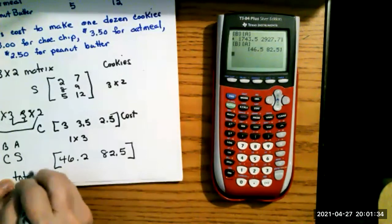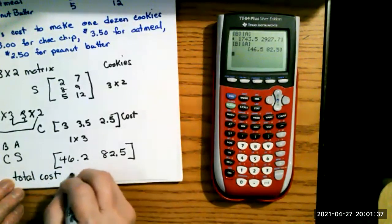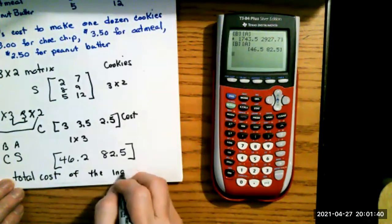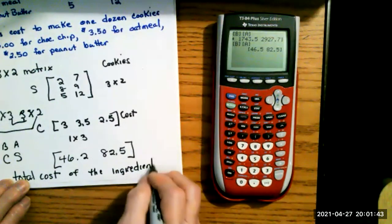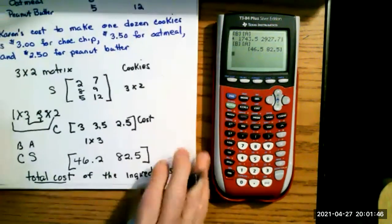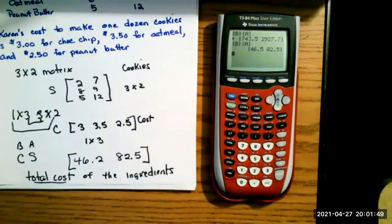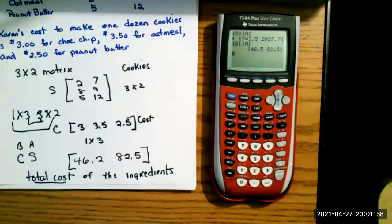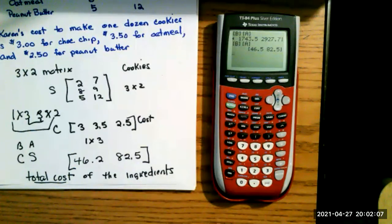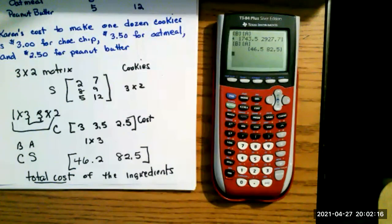The result of CS is the total cost of the cookies for each coffee shop. One student got 46.5 instead of 46.2, which may indicate an entry error. Any questions on how to enter matrices or multiply them in the calculator?